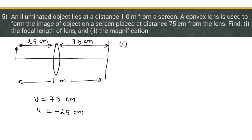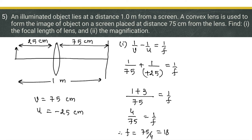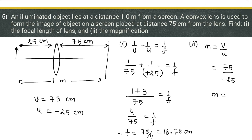Using the lens formula: 1/v - 1/u = 1/f. Substituting v = 75 and u = -25: 1/75 + 1/25 = 1/f. This gives (1 + 3)/75 = 4/75 = 1/f, so f = 75/4 = 18.75 centimeters. The magnification is m = v/u = 75/(-25) = -3.